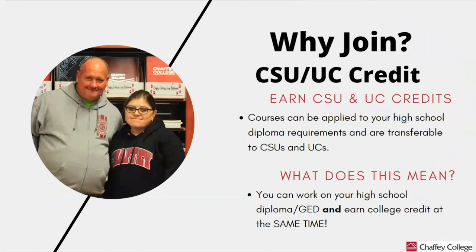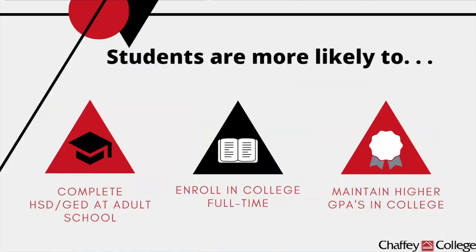Why should you join? You can earn CSU (Cal State University) and UC (University of California) credits. Courses will be applied to your high school diploma requirements and are transferable to Cal States and UCs. You can work on your high school diploma or GED and earn college credit at the same time. Students involved in dual enrollment programs are more likely to complete their high school diploma or GED, are more likely to enroll in college full time, and are more likely to maintain higher GPAs in college.